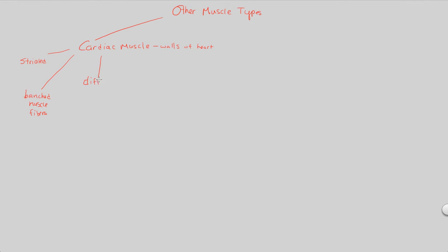What we see in cardiac muscle is that different areas of the heart — maybe the top of the heart or the bottom — have to contract simultaneously, meaning at the same time, at once. And in order to promote this simultaneous contraction, the heart's cardiac muscle will have structures called intercalated discs. Via intercalated discs, the heart has the capability of simultaneous contraction.